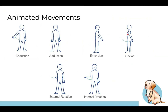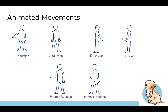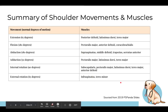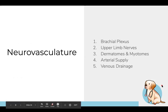Movements of the shoulder include abduction (arm out to the side), adduction (bringing it in front), extension (arm back), flexion (arm forward), external rotation (out), and internal rotation (in). You also need to know the degrees of each movement — if a patient can't extend or flex through the normal range, that's clinically significant. A table lists which muscles correspond to each action.